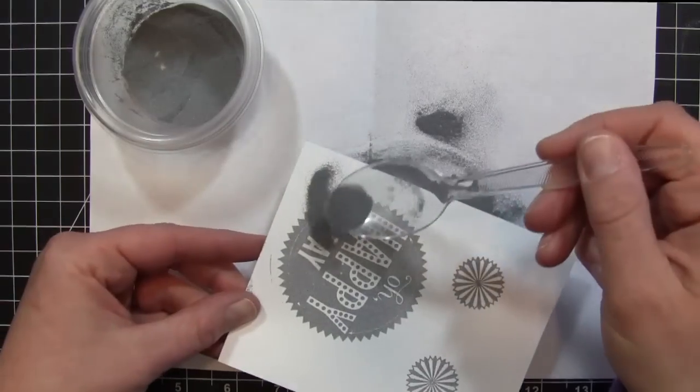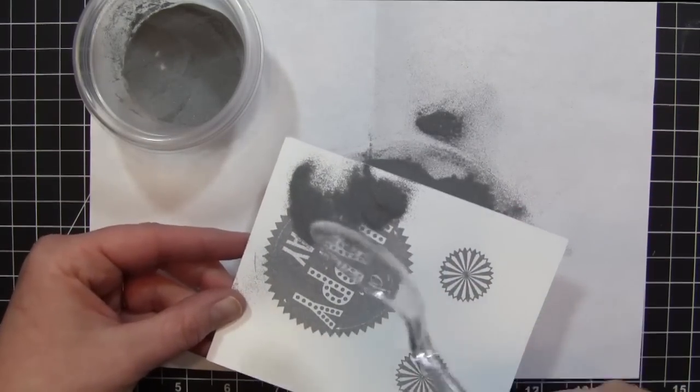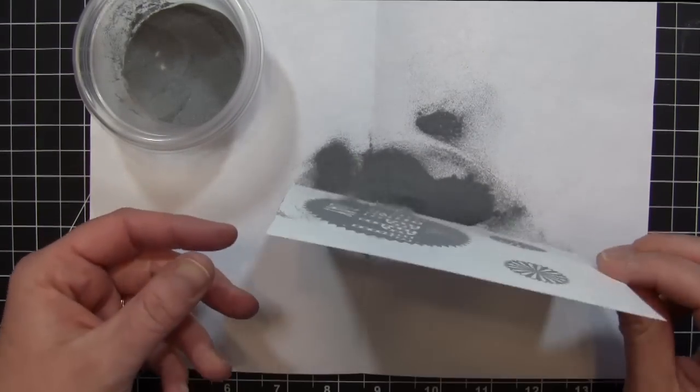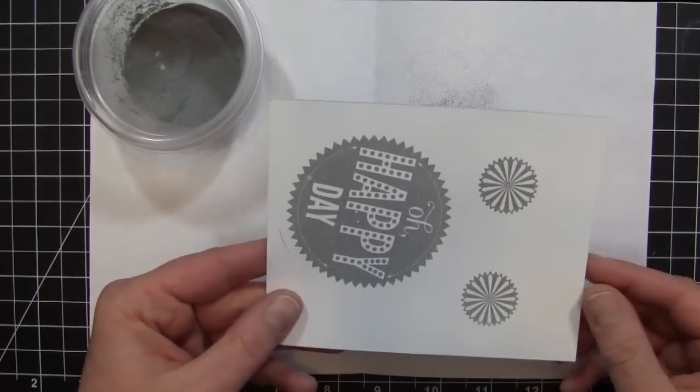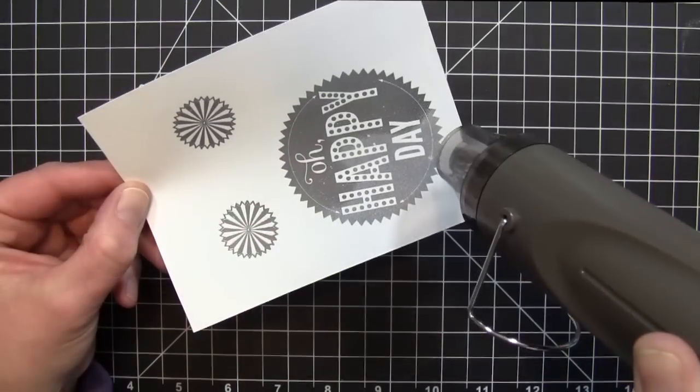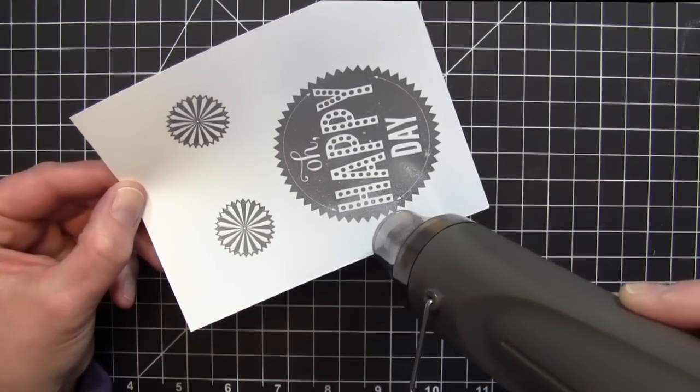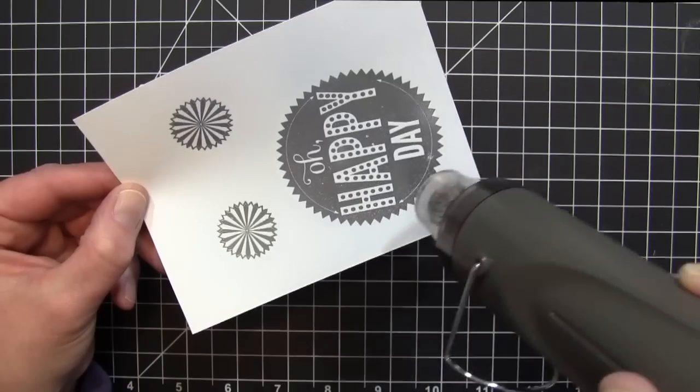I missed a little section, so I'm adding additional silver embossing powder to that. Once I have that all tapped off, I'm using my heat gun to melt that silver embossing powder. I really love the shine that comes out with that silver embossing powder.